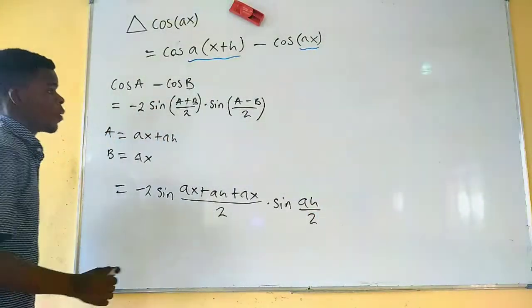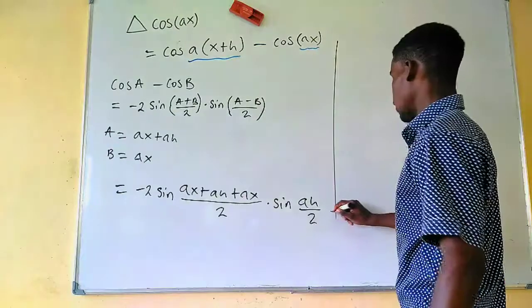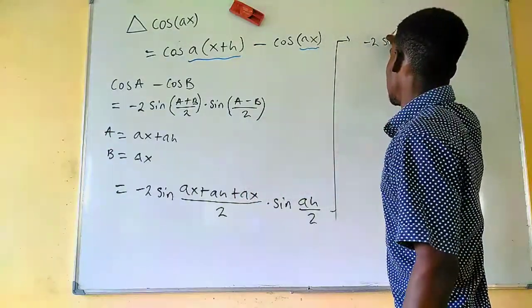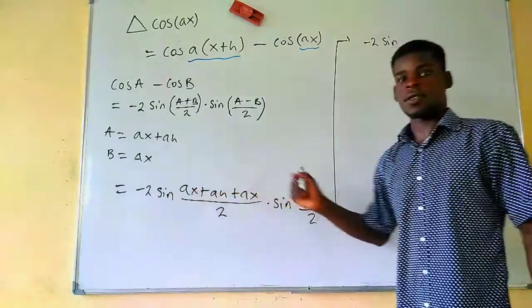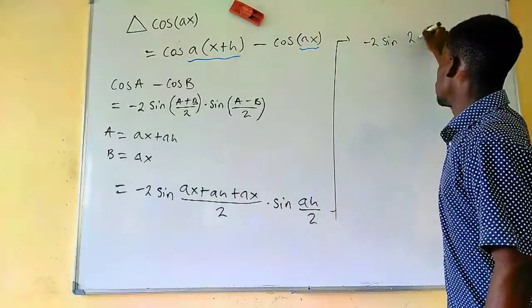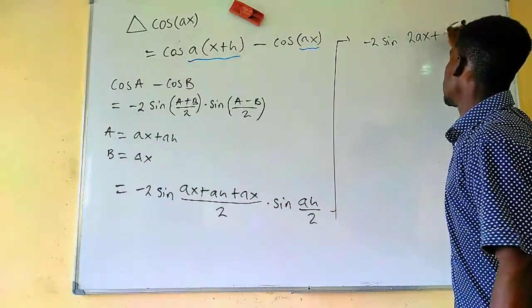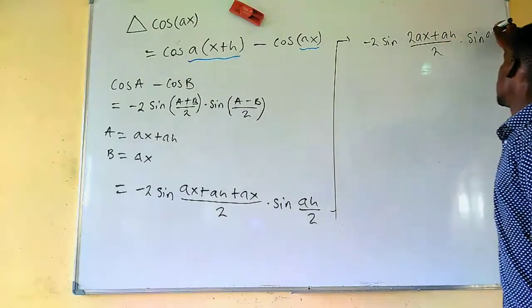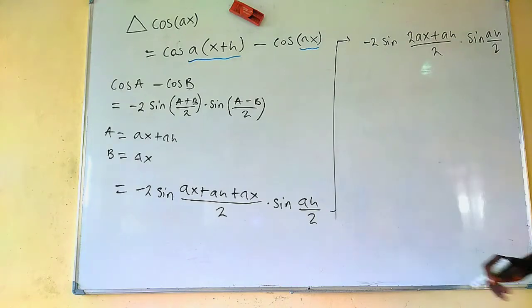So, on this part, we can just do some simplifications, and we're going to have negative 2 times sine of, this and this, just two of that, so we have 2x plus h, and we divide it by 2, and we multiply it by sine of h over 2, like this.